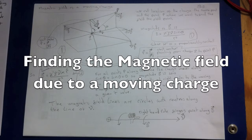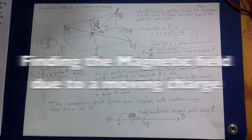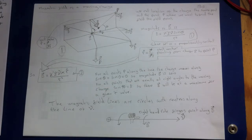We begin with the basics: the magnetic field of a single moving point charge Q. We call the location of the charge the source point and the point P where we want to find the field the field point.